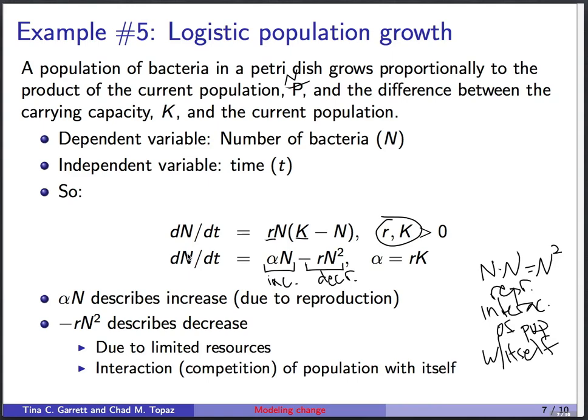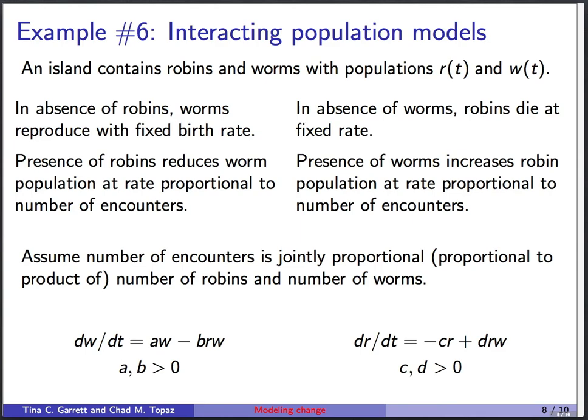This is a really important population growth model called the logistic model, which you'll probably study more in a future screencast. Now, talking about interactions, let's bump this up and instead of a single differential equation, talk about pairs of interacting differential equations — interacting populations. We'll imagine an isolated island with a population of robins and worms that change over time: the number of robins is r of t and the number of worms is w of t.